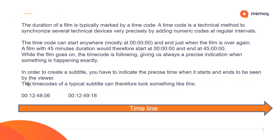The duration of a film is typically marked by a time code. A time code is a technical method to synchronize several technical devices very precisely by adding numeric codes at regular intervals. The time code can start anywhere and end just when the film is over. A film with 45 minutes duration would start at 0 minutes and end at 45 minutes. While the film goes on, the time code follows, giving us a precise indication of when something is happening. In order to create a subtitle, you have to indicate the precise time when it starts and ends to be seen by the viewer. The time codes of a typical subtitle can look something like what you see here on this page.